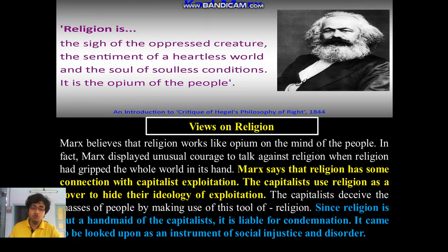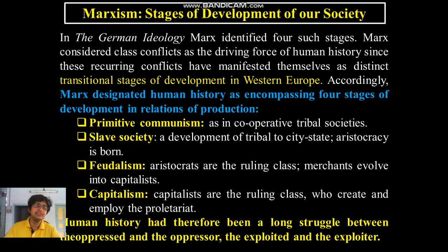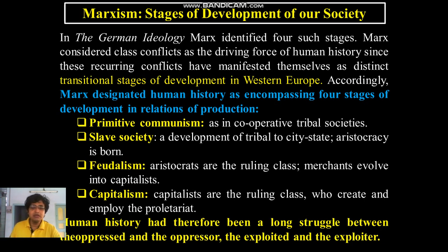I discussed Marx's view on religion and the stages of historical development. Our society developed from primitive communism to a slave society, to feudalism, to capitalism. Marx says there are innate contradictions in each historical stage that led to the next stage — from primitive communism to the slave society of Greco-Roman civilization, then to feudalism, and at last to capitalism.